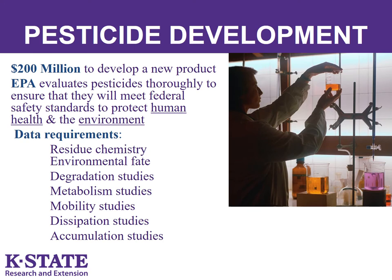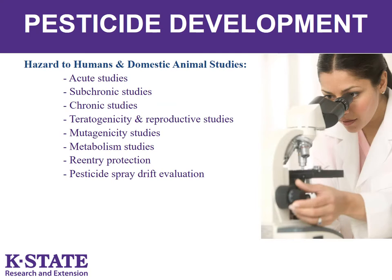The process of registering a pesticide is a scientific, legal, and administrative procedure through which we examine the ingredients of the pesticide, the particular site or crop where it is to be used, the amount, frequency, and timing of its use, and storage and disposal practices. In evaluating the pesticide registration application, a wide variety of potential human health and environmental effects associated with the use of the product are assessed. The company that wants to produce the pesticide must provide data from studies that comply with testing guidelines.